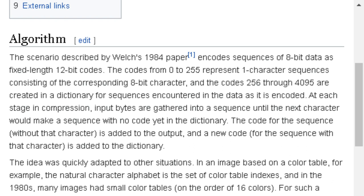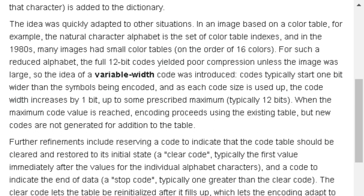The idea was quickly adapted into other situations. In an image based on a color table, the natural character alphabet is the set of color table indices. For such a reduced alphabet, the full 12-bit codes yielded poor compression unless the image was large. So the idea of variable-width codes was introduced. Codes typically start one bit wider than the symbols being encoded, and as each code size is used up, the code width increases by 1-bit, up to some prescribed maximum, typically 12-bits. When the maximum code value is reached, encoding proceeds using the existing table, but new codes are not generated.